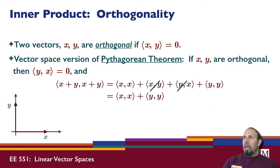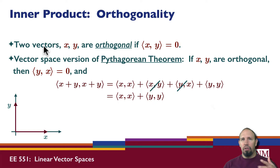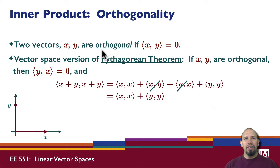Orthogonality is an important concept we can now define based on an inner product. Two vectors in a vector space — whether nth-order polynomials, n-dimensional vectors, or other objects — are orthogonal if their inner product is zero. Neither vector needs to be zero itself; if their inner product is zero, they are orthogonal. Orthogonality is a generalization of perpendicularity.